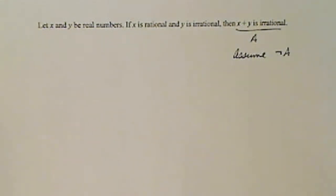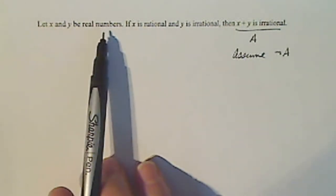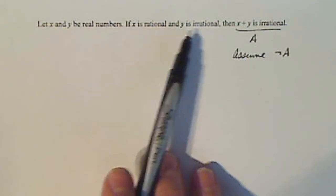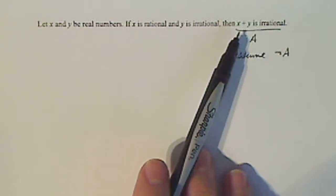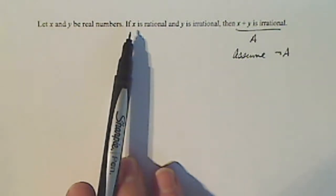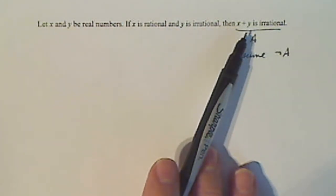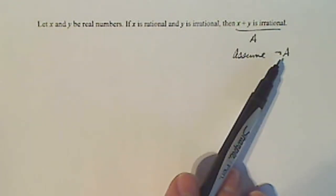Whenever you do proof remember you always have to start by defining your variables and your domains and all that kind of stuff to make the proof work. So we're going to let X and Y be real numbers. X is rational, Y is irrational and we're trying to prove that their sum is irrational. So in order to do this proof I have to assume that X is rational, Y is irrational and then X plus Y is rational which is not A.